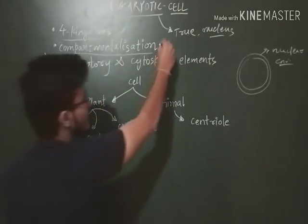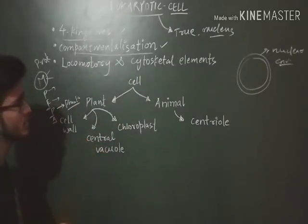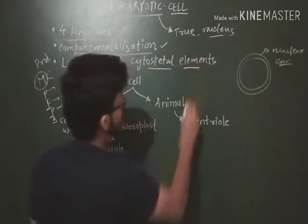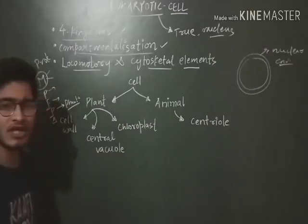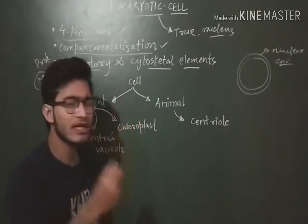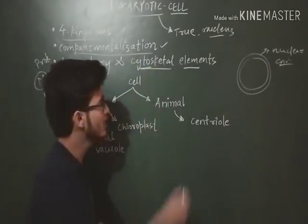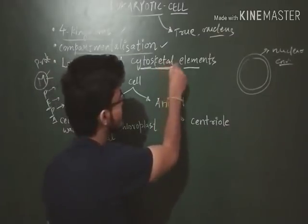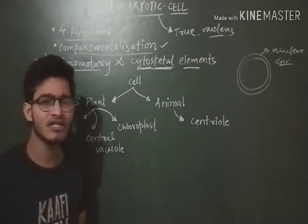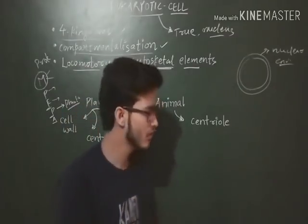Compartmentalization happens in eukaryotic cells. Also, some locomotory and cytoskeletal elements are present. Cytoskeletal elements — 'cyto' means cytoplasm and 'skeletal' means they provide strength or rigidity to a cell as well as helping in movement.